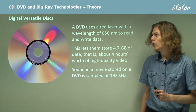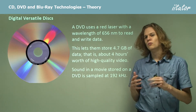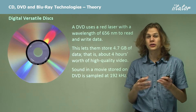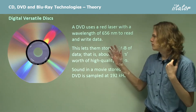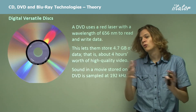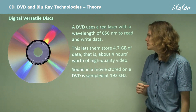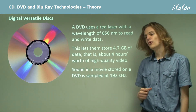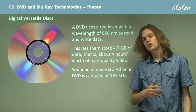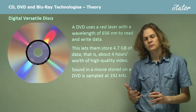Our next disk is the DVD, or digital versatile disk. A DVD doesn't use an infrared laser — it uses a red laser with a little bit more energy, at a wavelength of 656 nanometers. This higher-energy laser is why you can't burn a DVD using a CD burner; it's the wrong sort of laser. Because we're using a much smaller wavelength, we can write smaller pits and not-pits with smaller distances between them, fitting more data on the disk. A DVD can store 4.7 gigabytes of data, which is four hours of high quality video. Sound in a DVD movie is sampled at 192 kilohertz, which is much higher quality than on a CD.